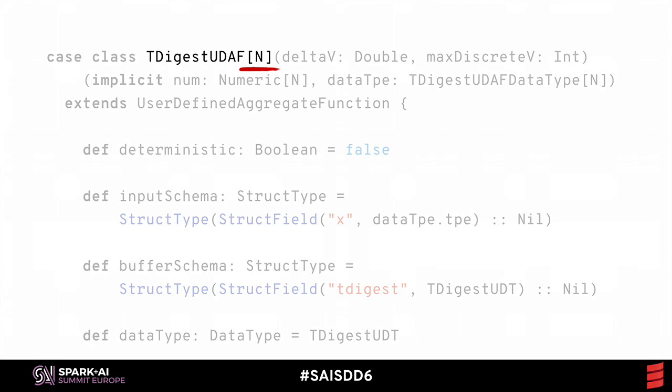This aggregator can operate on any kind of numeric column, and so it takes a type parameter that allows the user to tell it what type to expect. Some aggregators don't have this dependency, and you don't have to define that when working with your library. My aggregator also takes a couple of parameters that allow the user to specify some details about how it operates. If you're writing an aggregator that always operates the same way, it might not require any parameters whatsoever.